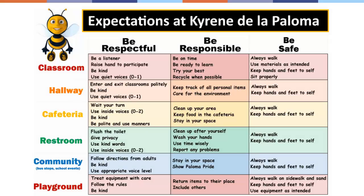This slide shows the expectation matrix that was developed at Paloma. Paloma uses the 3 B's of be respectful, be responsible, and be safe. If you look closer at this slide, you can see that the 3 B's have been defined in the classroom, hallway, cafeteria, restroom, community, and playground.